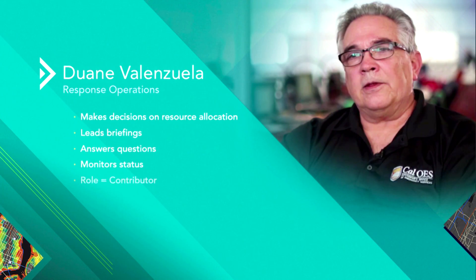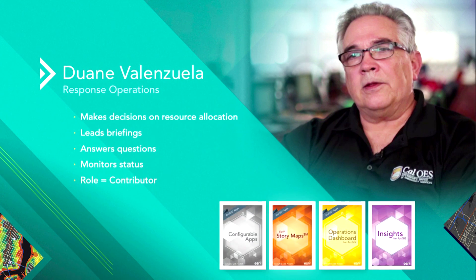Dwayne is managing people out in the field, so he's got to make decisions on where to move resources and where they need to be. His role is a contributor — he's actually going to be editing data, maybe deploying crews to certain areas and telling them where to go. And then it's the exact same apps that the other two personas have needed as well.